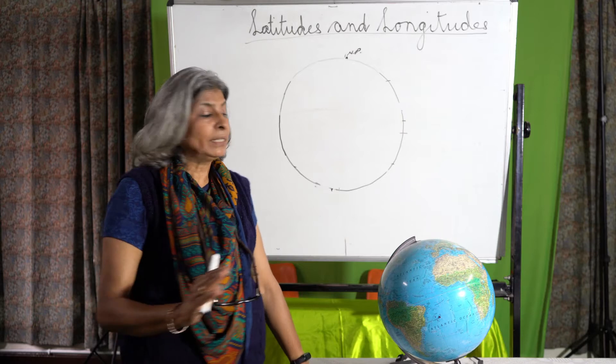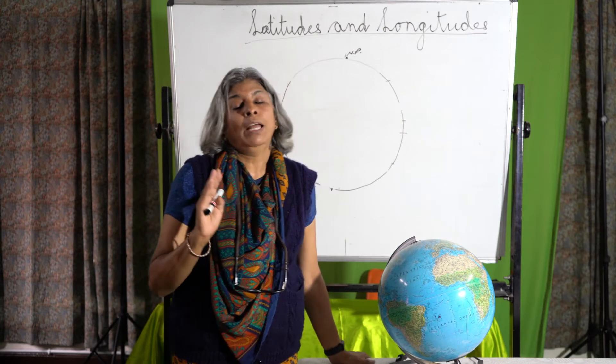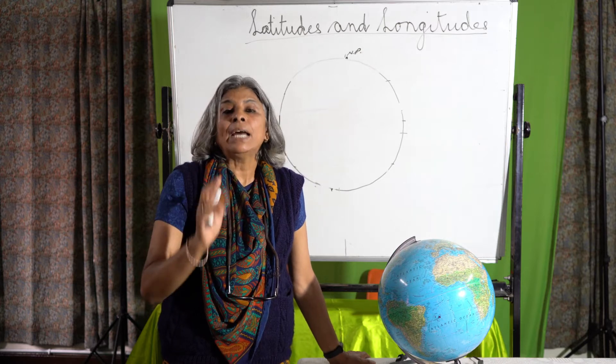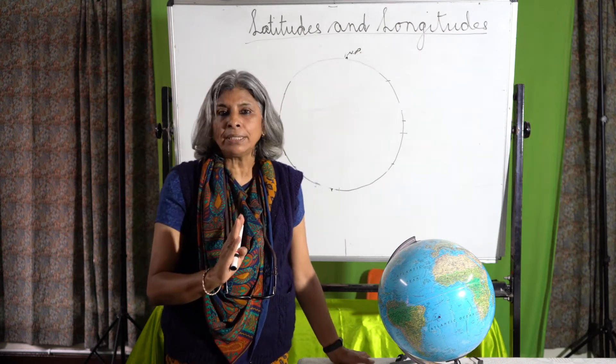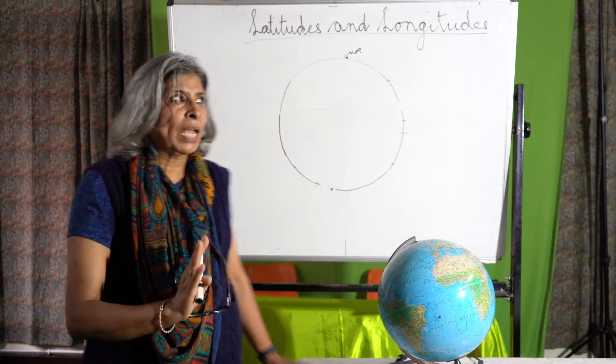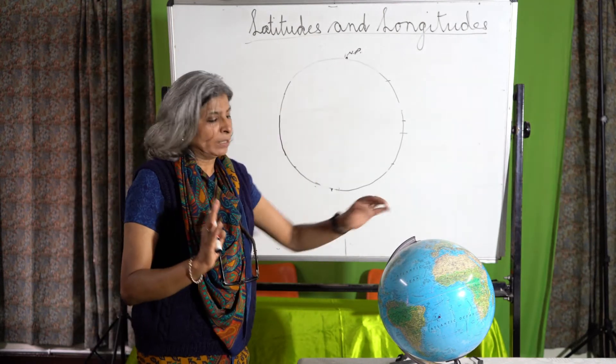The horizontal lines are the parallels of latitude. Now what is a parallel? Parallel lines are lines that never meet. They are equidistant, that is equal distance from each other and they never meet.